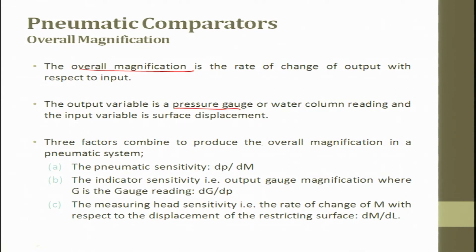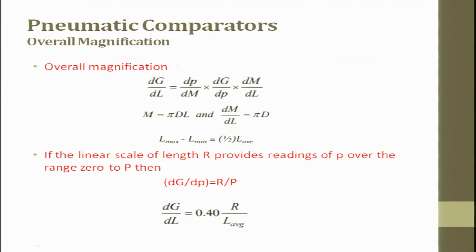Now, if you want to look at the overall magnification, the overall magnification is the rate of change of output with respect to input, that is magnification. The output variable in the pressure gauge or water column reading today it is only pressure gauge and the input variable is surface displacement. The three factors combined to produce the overall magnification are pneumatic sensitivity, indicator sensitivity and measuring head sensitivity. That is nothing but D P by D M plays one role, then D G by D P that is nothing but the output gauge magnification where G is the gauge reading and P is the pressure. And the measuring head sensitivity, that is the rate of change of M with respect to M with respect to the displacement of the restricting surface D M by D L.